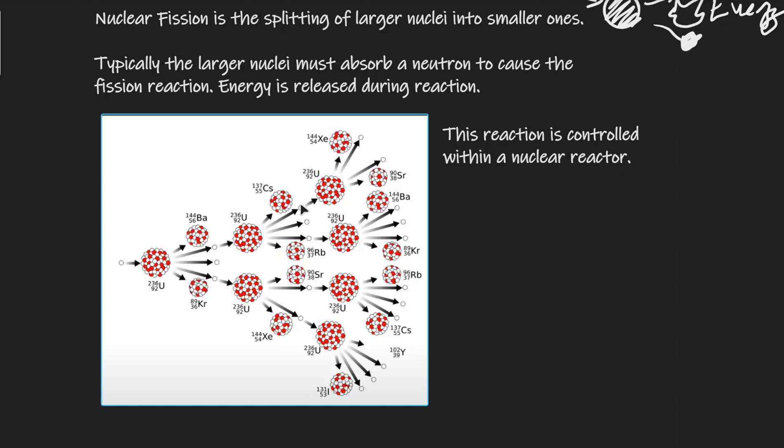And then the whole process keeps repeating itself until you have a chain reaction. Now we can control this reaction within a nuclear reactor. But in something like a nuclear explosion, for instance, this reaction may be uncontrolled.